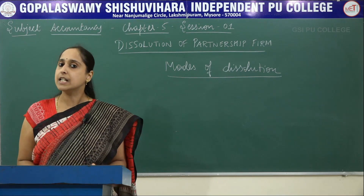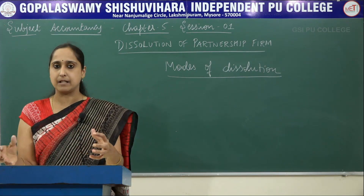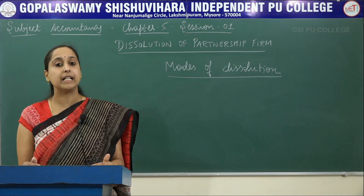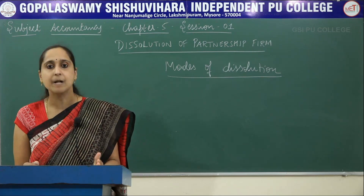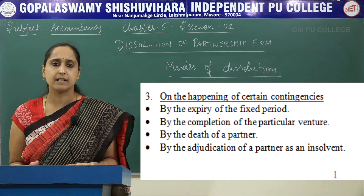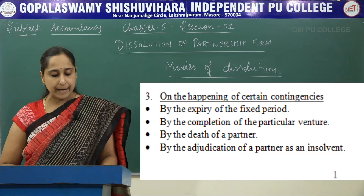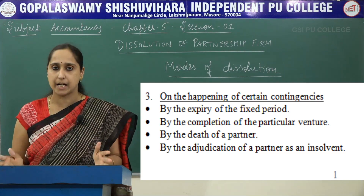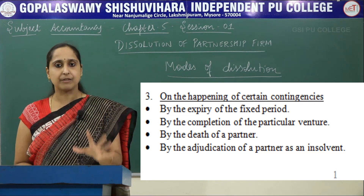Next case is dissolution on the happening of certain contingencies. First, by the expiry of a fixed period — if they have made an agreement to conduct business for 5 or 10 years, after the expiry of that fixed period, the firm is closed. Next, by the completion of a particular venture — after completion of that project, the firm is closed. By the death of a partner — if one partner dies, the other partners may feel it is not suitable to continue and may dissolve the firm. And by the adjudication of a partner as insolvent — adjudication is a legal process of settling disputes; in those situations, the firm is closed.